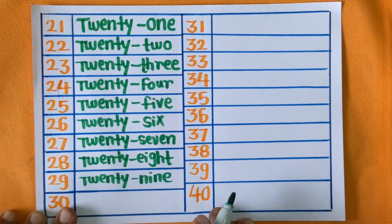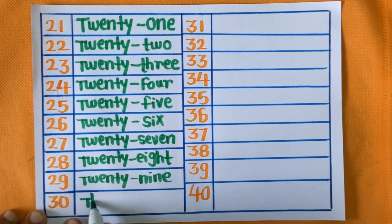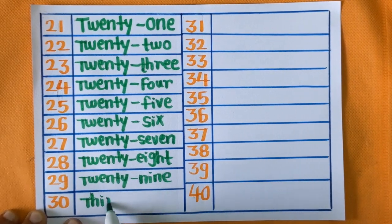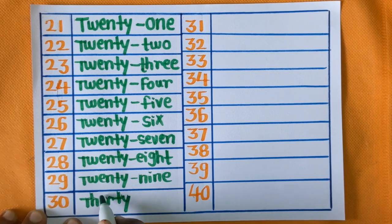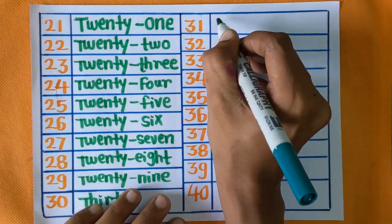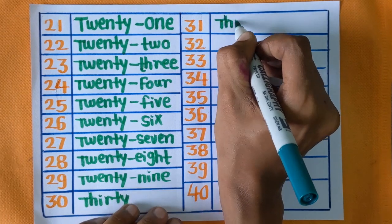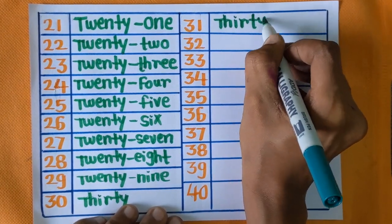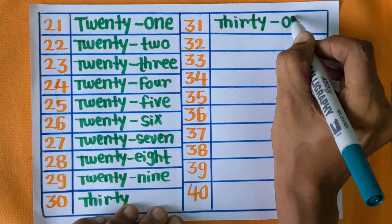Next is twenty-nine: T-W-E-N-T-Y, N-I-N-E, twenty-nine. And thirty: T-H-I-R-T-Y, thirty.